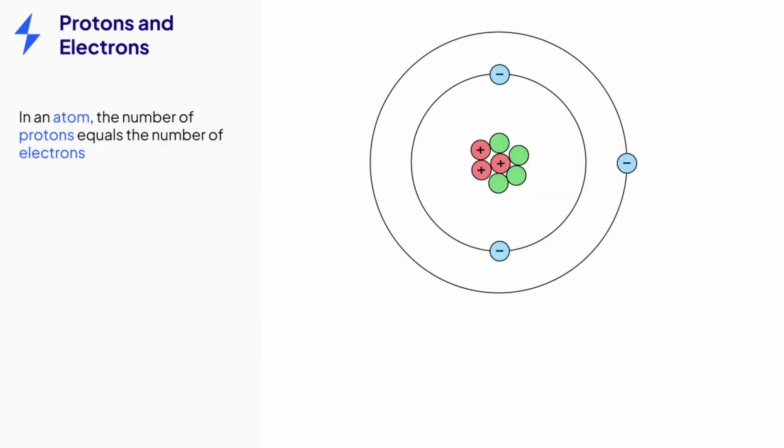In an atom the number of protons and electrons are equal. We know this because atoms have an overall neutral charge. If this weren't the case then every atom would repel each other and everything you see around you wouldn't exist. Thankfully that doesn't happen.